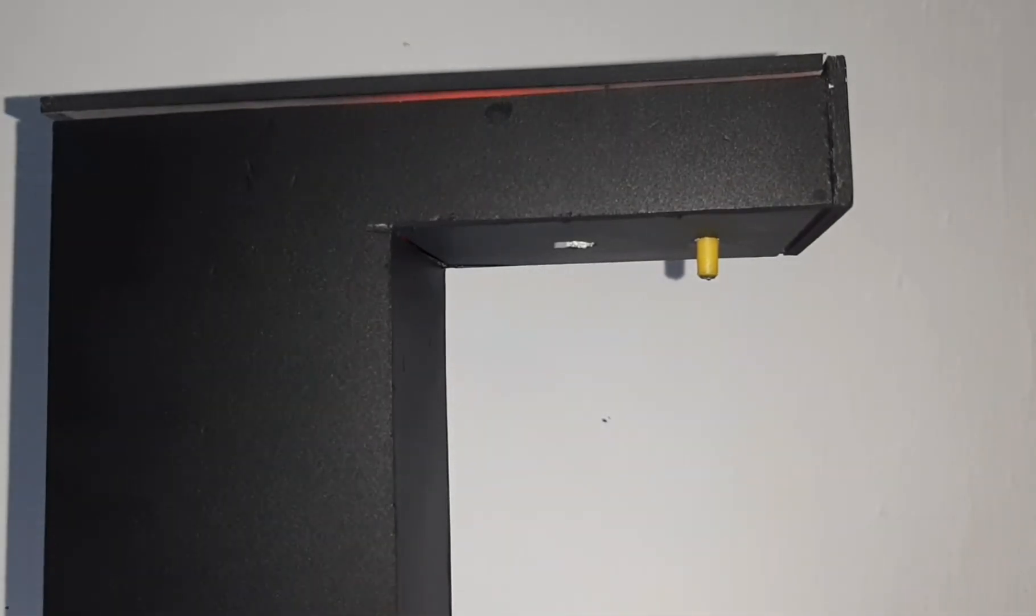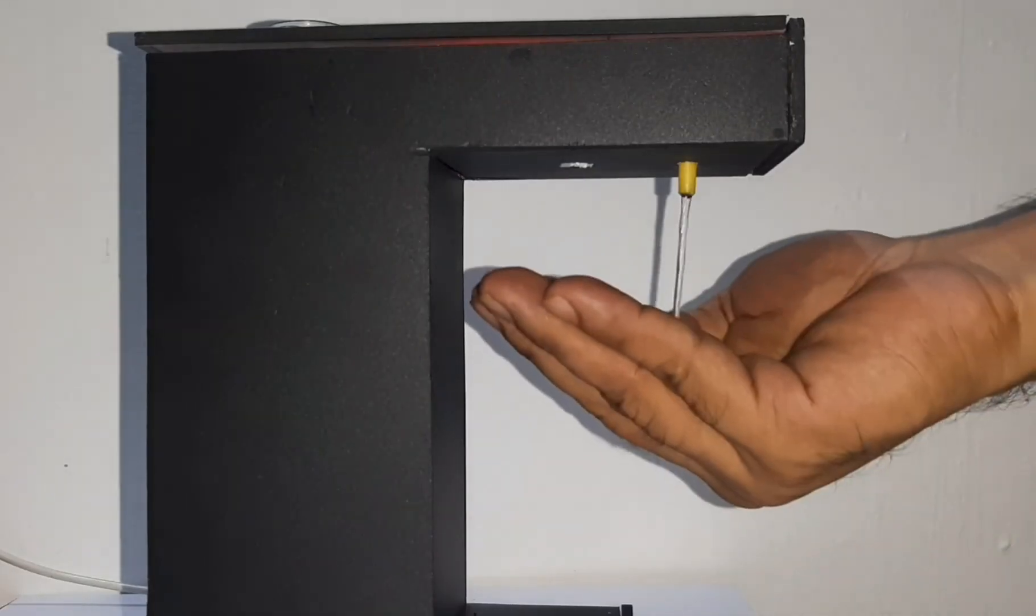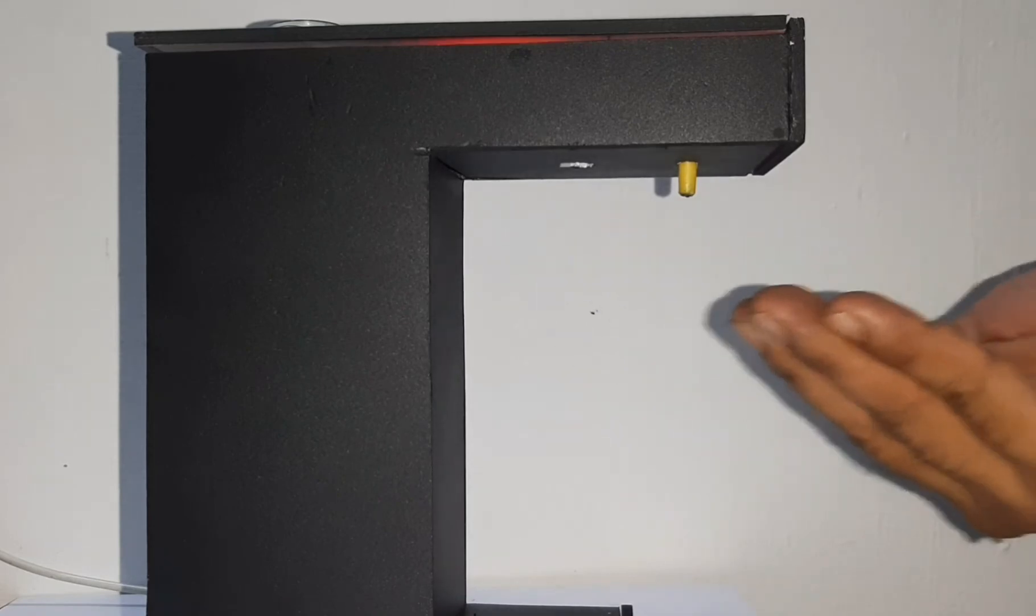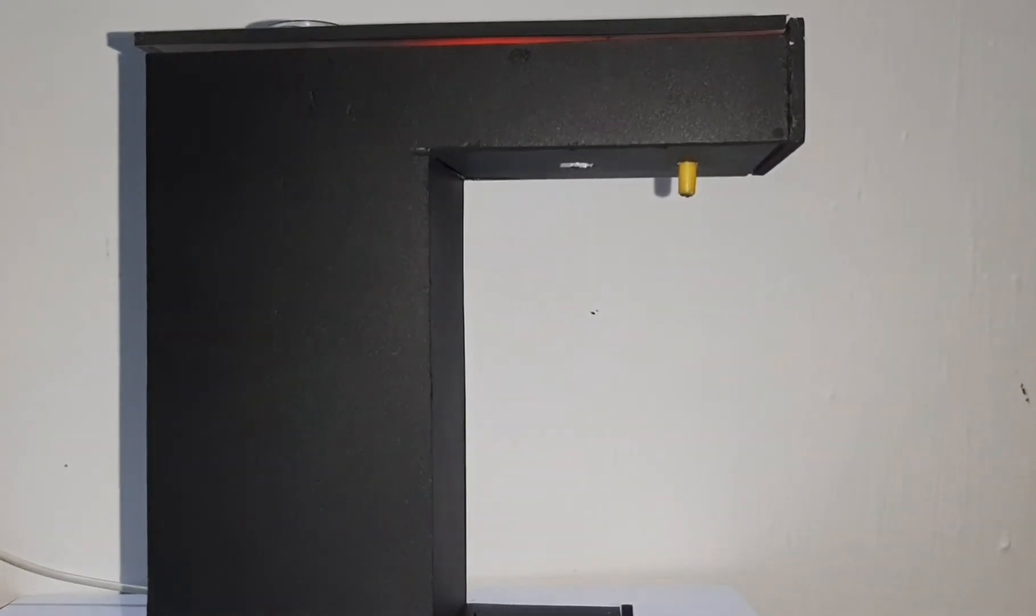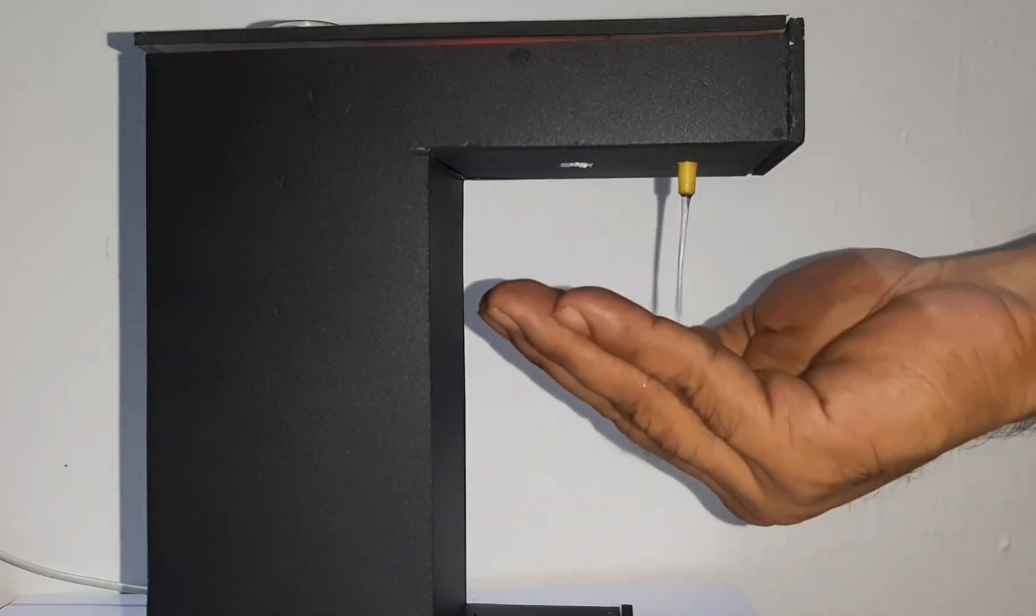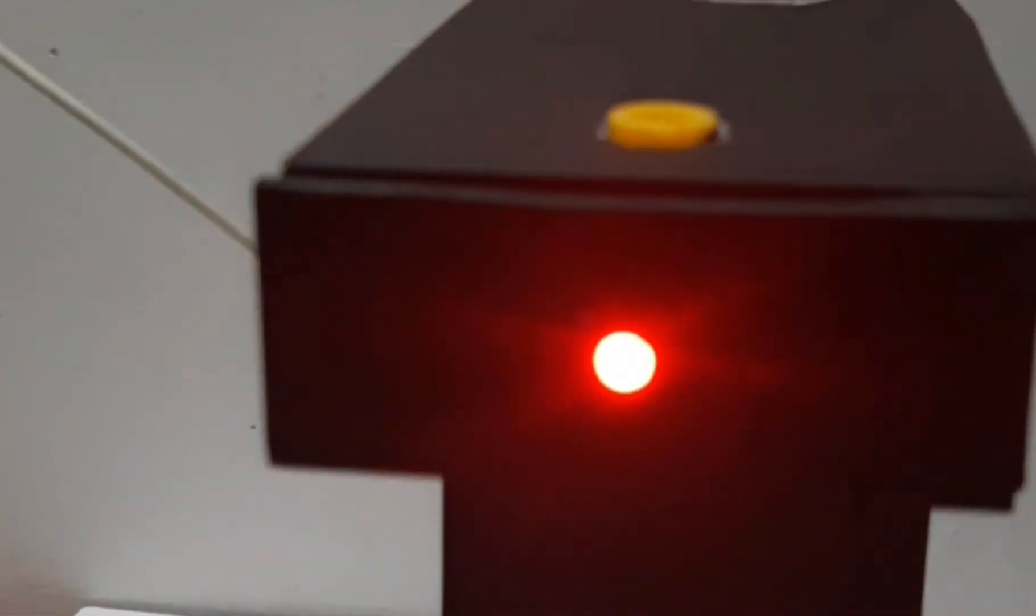And this is the way it works. When you bring your hand closer, it will dispense a certain amount of sanitizer, then it automatically stops. If you're trying to keep your hand there, it will not dispense. It needs time to reset. That's why we are using a timer circuit in order to avoid the continuous dispense of the sanitizer.